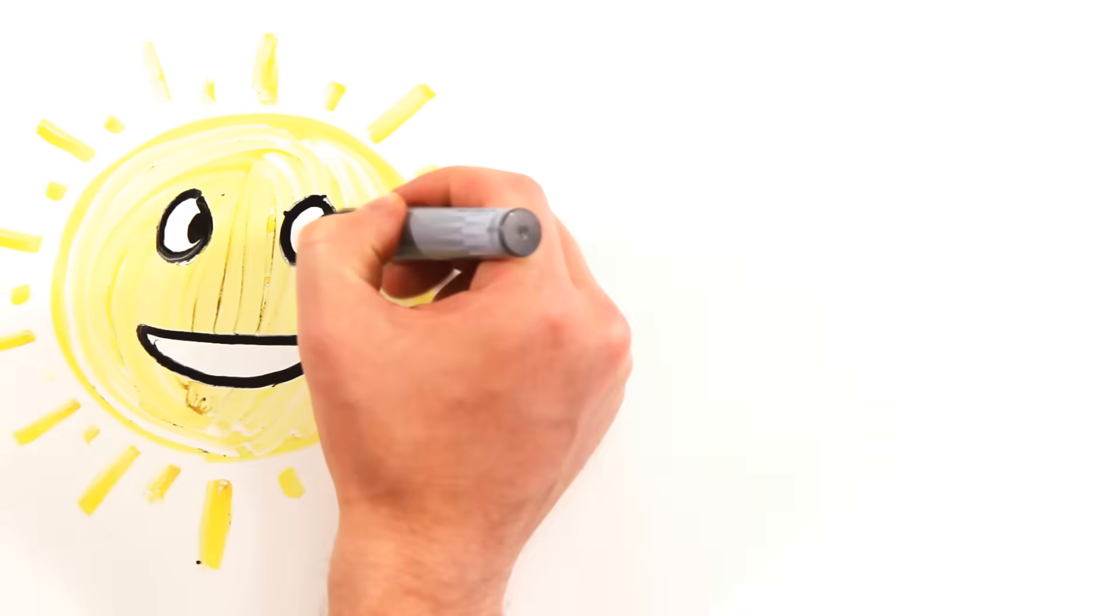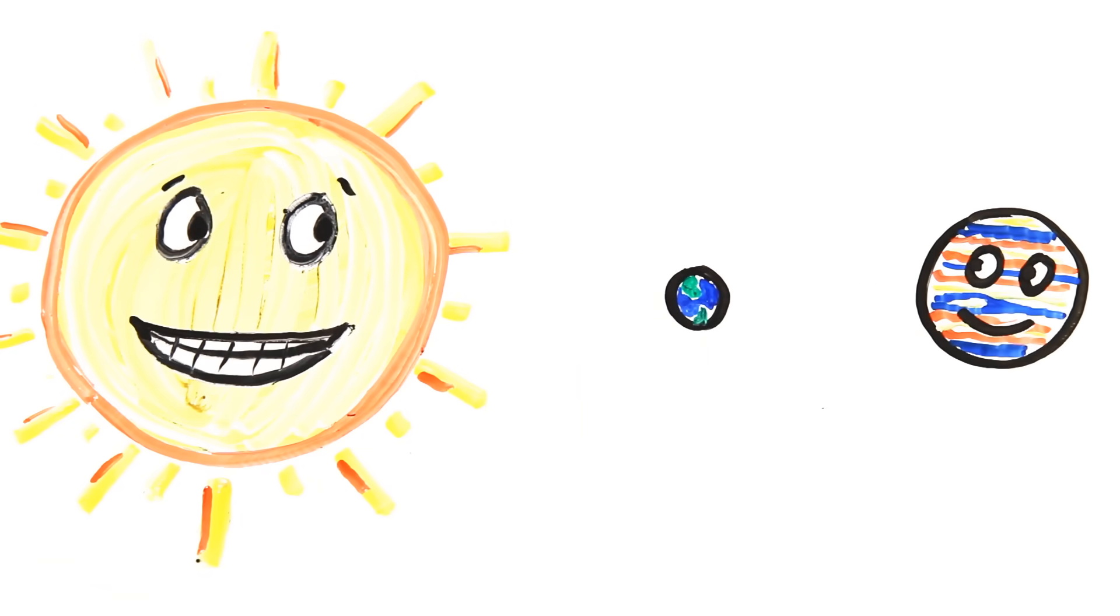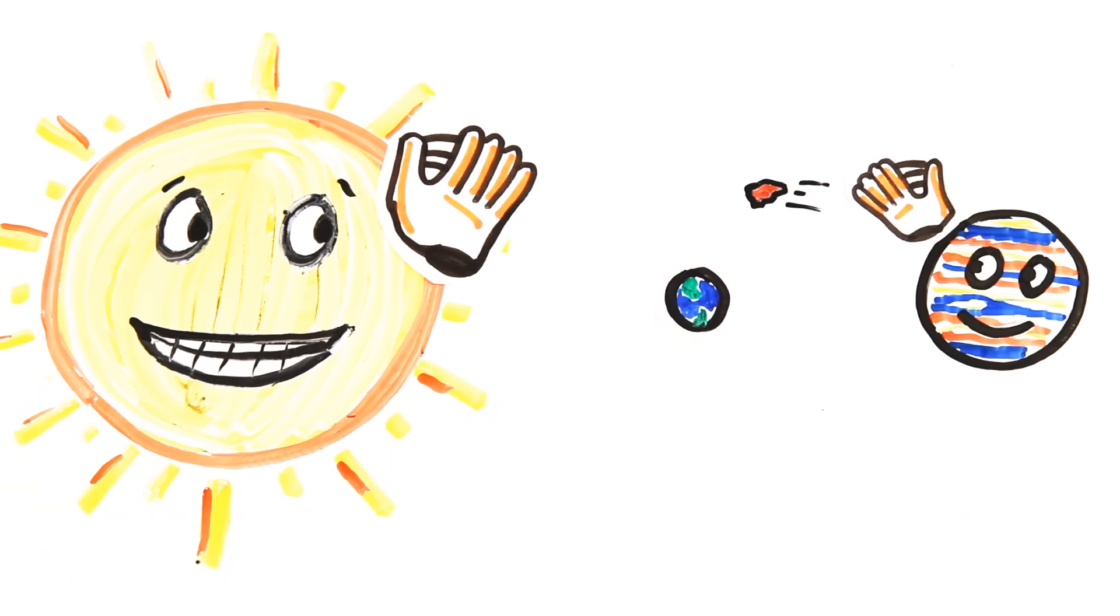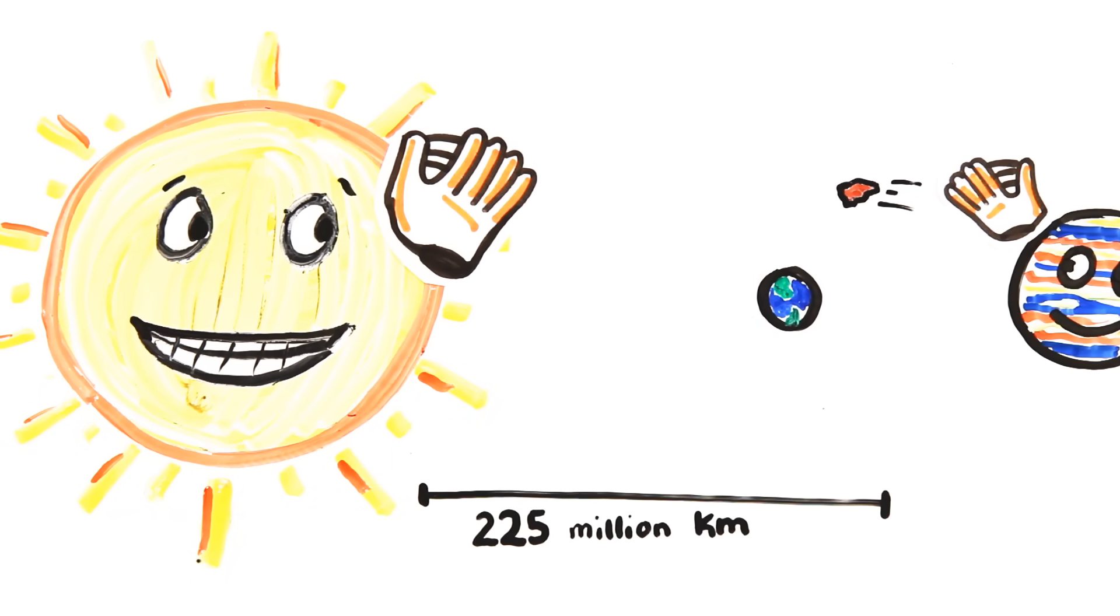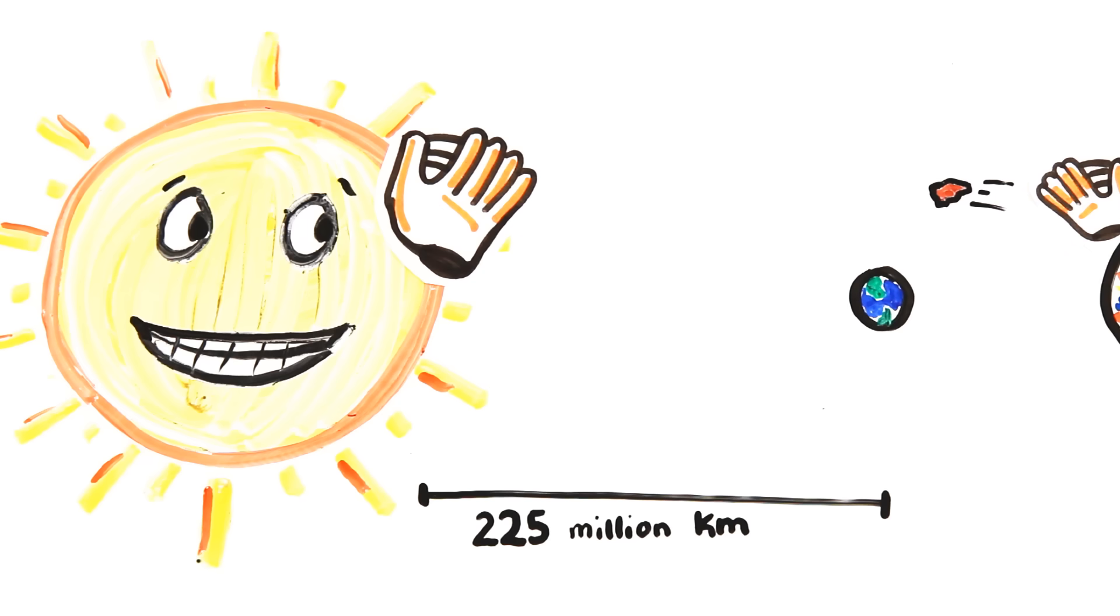In between passes, the asteroid would slingshot around the Sun, fly out to Jupiter, and then be gravity-assisted back to Earth, like one long version of catch between planets. Over millions of years, this would move the Earth to a comfortable 225 million-kilometer orbit out from the Sun.